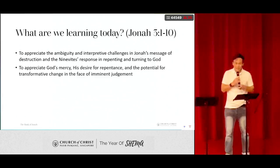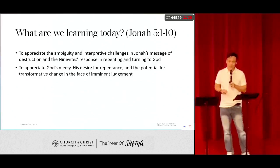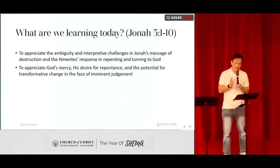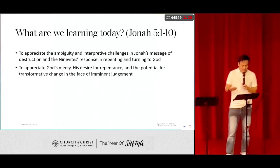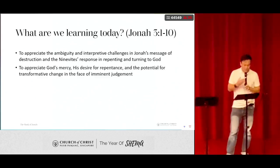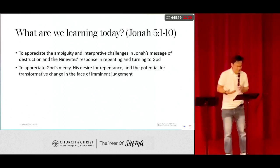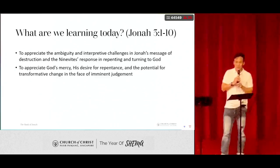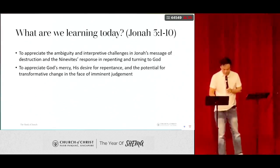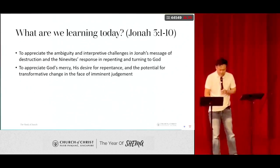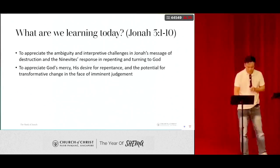So what are we learning today? Today's lesson is in Jonah chapter 3, and there are two objectives. One is to appreciate the ambiguity and interpretive challenges in Jonah's message to the Ninevites when he preached in the city. And to appreciate God's mercy, his desire for repentance, and the potential of transformative change in the face of imminent judgment. If you have the Bible, can you turn to Jonah chapter 3? We will read the 10 verses, and after that I will say a prayer before we start the lesson.